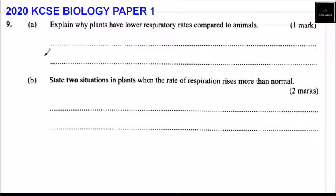This is question number 9, 2020 KCSE Biology Paper 1, part A: explain why plants have lower respiratory rates compared to animals, and you get one mark.